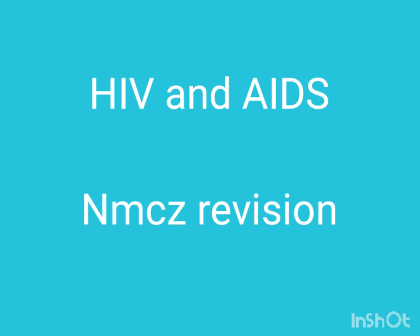Let us now discuss objective number three: the complications of HIV and AIDS. Number one: pulmonary tuberculosis. Number two: atypical aseptic meningitis. Number three: acute encephalitis. Number four: autonomic neuropathy damage. Number five: Kaposi's sarcoma.